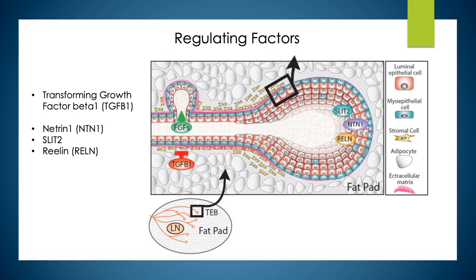While positive factors that elicit growth are clearly important for creating ductal architecture, negative regulators are equally important, particularly in the mammary gland, which has an open ductal architecture with ample space between branches for pregnancy-induced alveolar infilling. Transforming growth factor beta 1, TGF-beta-1, has been identified as a major negative regulator of mammary branching and ductal elongation, restricting bud bifurcation and branch formation by limiting epithelial proliferation. Additionally, a host of secreted proteins regulate mammary morphogenesis, including Netrin-1, SLIT-2, and RELIN, proteins that regulate axon guidance and cell migration during neural development, and also regulate mammary ductal morphogenesis.